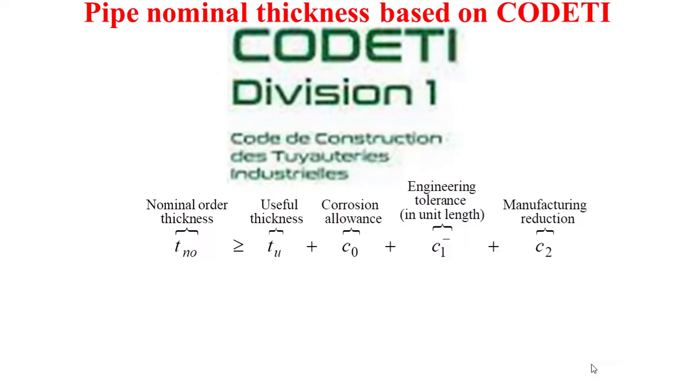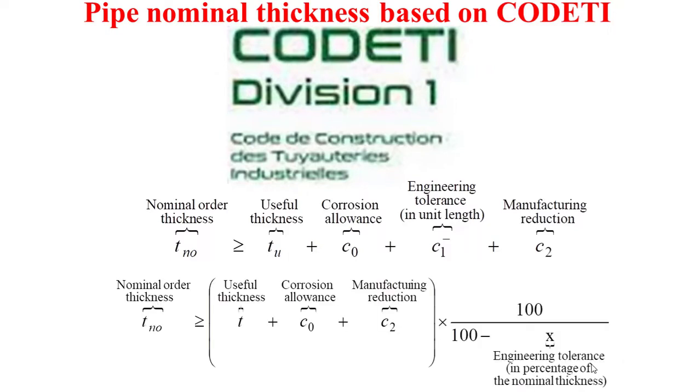When the engineering tolerance is not in unit length, but is in percentage of the nominal order thickness, this nominal order thickness should be no less than the useful thickness plus the corrosion allowance plus the manufacturing reduction.